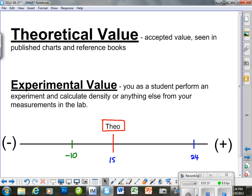And let's look at this defined again. Theoretical value, right up here, is accepted value as seen in published charts and reference books. You might want to stop this video and copy this down. This is good information. Your experimental value, on the other hand, is you, as a student, perform an experiment and calculate the density of anything else from your measurements in the lab.